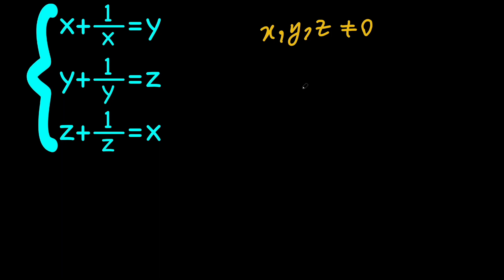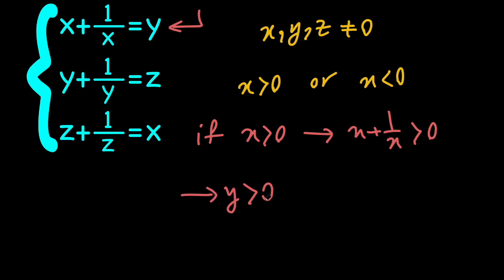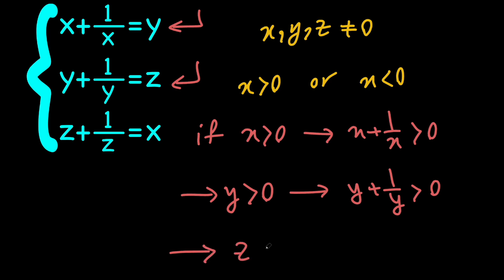We have two cases for the value of x: x can be positive or x can be negative. Let's talk about the first scenario where x is positive. If x is positive, that means x plus 1 over x is going to be positive. But notice that x plus 1 over x is y, so that means y is going to be positive.